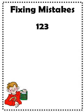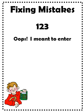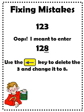The next function we will look at is fixing mistakes. Start by entering the number 123 into your calculator. Oops, I meant to tell you to enter the number 128. To fix this mistake, use the delete key to delete the 3 and change this digit to an 8. To see what this looks like, click the next slide.